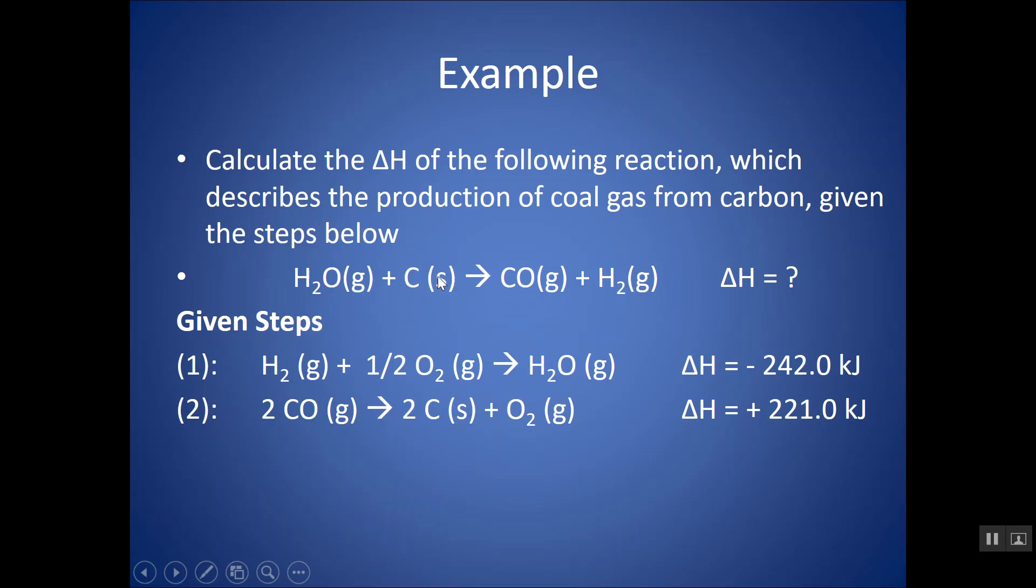My next thing is C solid. Let's find that. There it is. Only in my second step. Is it on the correct side? No, it's a product here. I want it as a reactant. So, I'm going to flip this reaction and flip the sign of delta H. And, it also doesn't have the correct coefficient. I want it to have a coefficient of one. But, here it has a coefficient of two. So, I am going to divide this entire thing by two, or you can think of it as multiplying by a half. That also justifies flipping this first reaction.